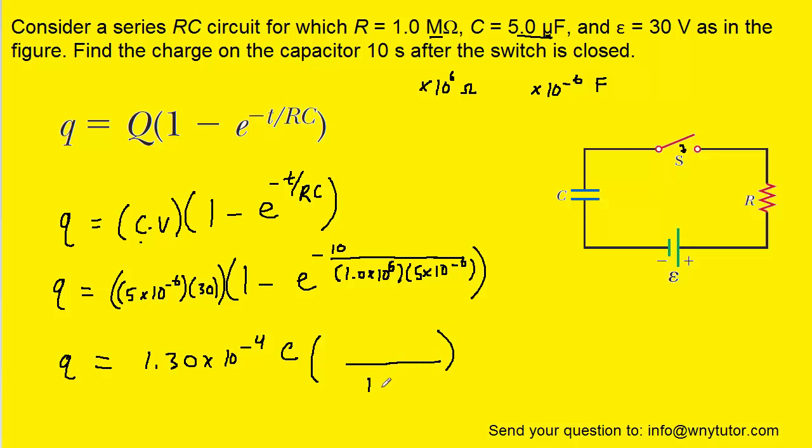And then if we need to convert that into microcoulombs, we just have to recall that 1 coulomb is 10 to the positive 6 microcoulombs. And so when we perform that calculation and cancel these coulombs out, we get 1.30 times 10 to the positive 2 microcoulombs. So this would be the correct answer.